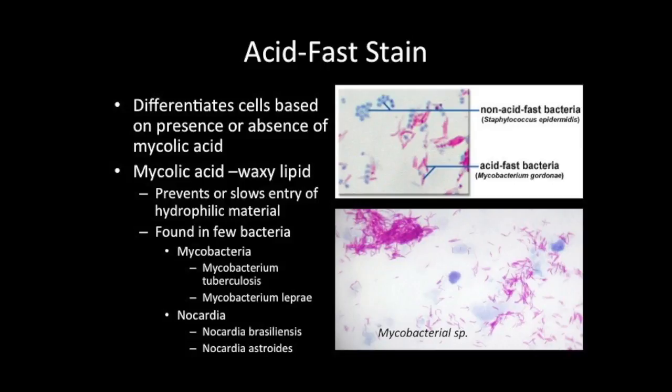In this lab session, you will be learning how to perform the differential stain known as the acid-fast stain. The acid-fast stain is a staining technique that allows for the detection of cells that contain mycolic acid in their cell wall. Mycolic acid is a waxy lipid that makes the cell wall hydrophobic, and thus causes the cell wall to act as a barrier to hydrophilic substances, including aqueous staining solutions and water-soluble antibiotics and disinfectants.